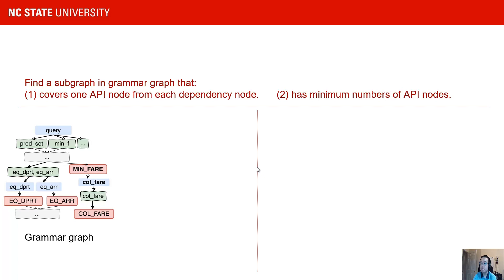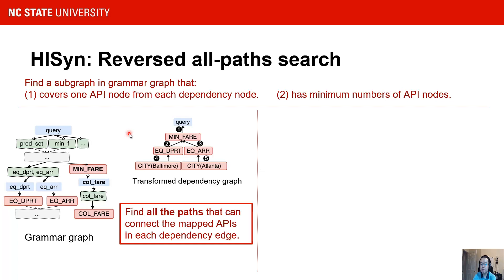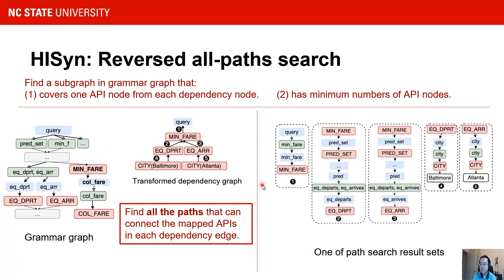On the grammar graph, the synthesis problem becomes: find a subgraph in the grammar graph that covers one API node from each dependency node and contains a minimum number of API nodes. We transform the original dependency graph by replacing the nodes with mapped APIs. The transformed dependency graph guides the search process. For each dependency edge, by locating APIs inside the grammar graph from child node to parent node, we do a reverse path search on the grammar graph to find all paths that can connect these two APIs. These paths are taken as candidate paths for that dependency edge.